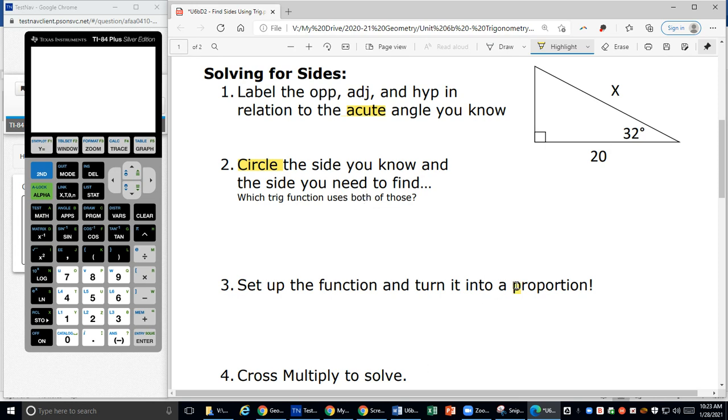Step three, we're going to write a proportion. Remember, proportion is two equal ratios or two equal fractions. And then the last step we're going to do is we're going to cross-multiply that proportion so that we can solve it. We're going to label our sides based on the acute angle, circle the side we know and the side we're trying to find, set up our function as a proportion, and then cross-multiply and solve.